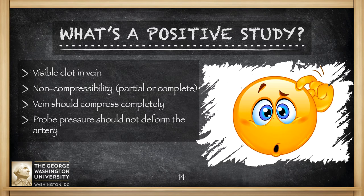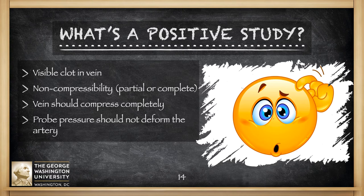When it comes to deciding what a positive study is, this is really an exam in which you are trying to figure out if there is a space-occupying lesion inside the blood vessel. This is not primarily about seeing color flow, although you can use that to determine if someone has an occlusive clot. Really what we're trying to see is whether something is preventing full compression of the vein, because if there is, that is very worrisome for a blood clot. If you have to put so much pressure on the patient to completely collapse their artery and you're still having a hard time collapsing their vein, that should be a sign that there is something in the vein that's not supposed to be there.